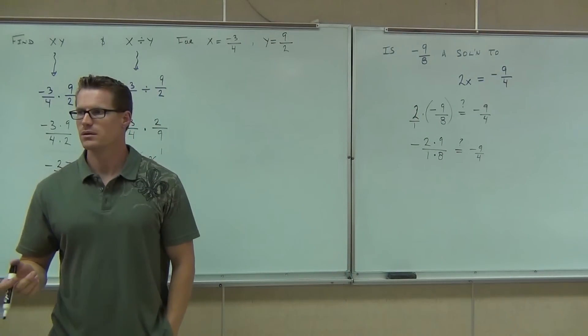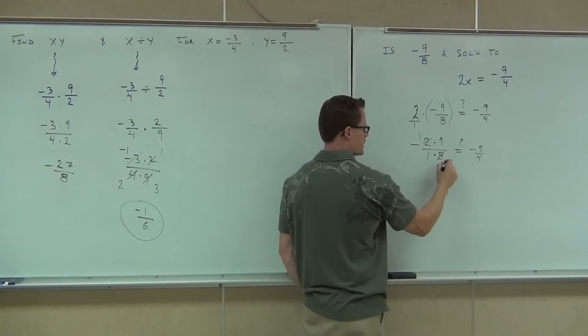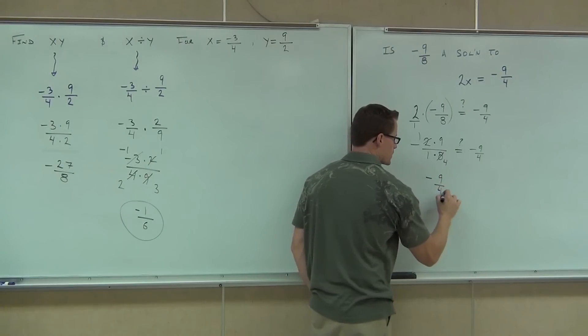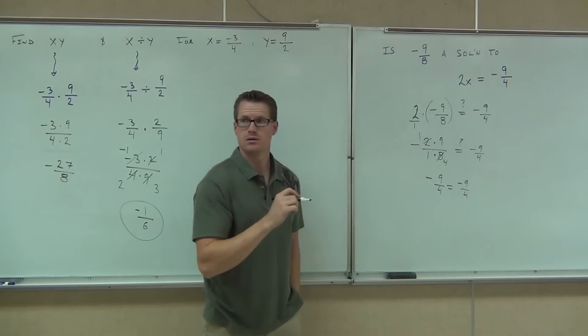What do you think? Yes. Yeah, we'll do some simplification. 2 goes into 2 one time and into 8 four times. We get negative 9 fourths. That is equal to negative 9 fourths. Is that a solution or not? Yes. Good.